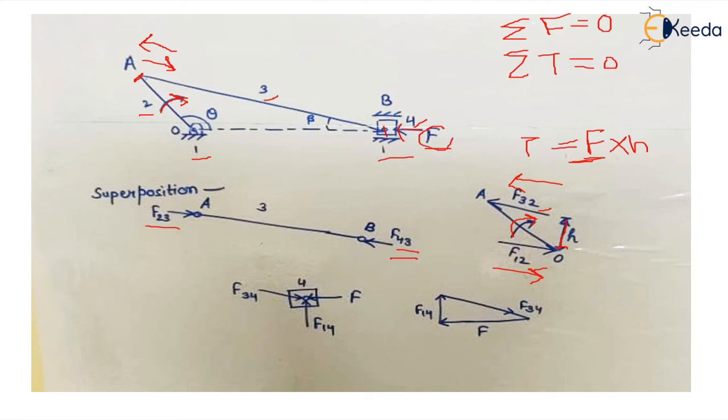Now let's assume that I have to find the value of this force F. If I talk about body 4, it has got three forces: one because of body 3, one externally applied force, and one force because of the fixed end. We know the condition for static equilibrium of three-force members: the line of action should meet at a point and their resultant should be zero.